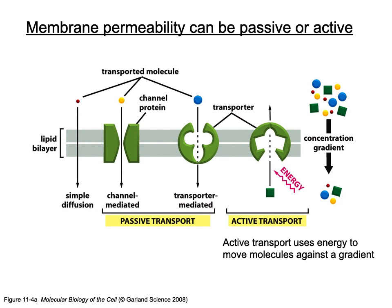Membrane permeability can be passive or active. Non-polar molecules simply diffuse across, but polar and larger molecules need channels or transporters. If done passively, no ATP energy is utilized. Aquaporin water transport uses no ATP — it's passive. Some transporters can also be passive, while others require energy for active transport.